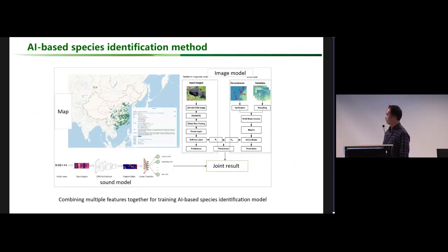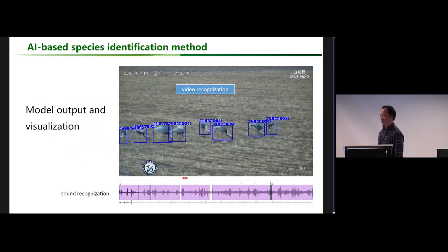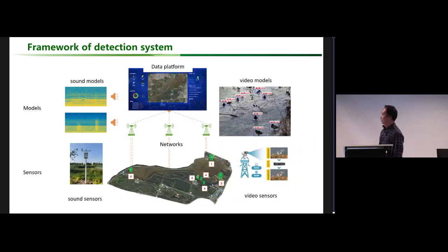We combine multiple features and multiple data types - images, sounds, videos, and distribution maps of species together - for training AI-based species identification models to produce joint results. We have developed software that can recognize video and sound together at the same time. This is the output and visualization tool.